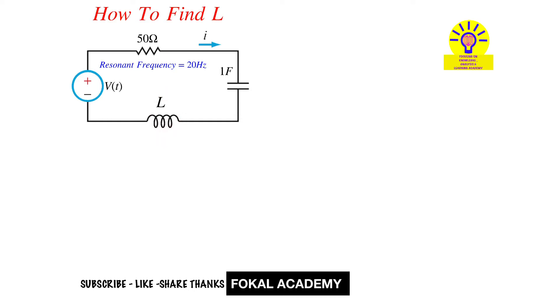We know that for a series RL circuit, the resonant frequency fr equals 1 over 2π times the square root of LC. Now substitute every value here: fr is 20 hertz, L is the unknown, and C is given as 1 faraday.